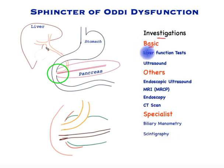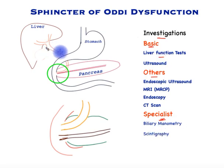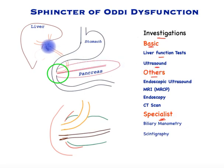What investigations are required to diagnose this? There are the basic investigations, then there are others to rule out other conditions, and then there are specialist investigations specifically for the sphincter of Oddi dysfunction. Basic ones are the liver function tests. These measure the level of bilirubin in the blood and the liver enzymes indicative of hold-up of bile, as well as an ultrasound scan assessing the bile tube size — because if there is a hold-up to the flow of bile, the size of the bile tube becomes bigger.